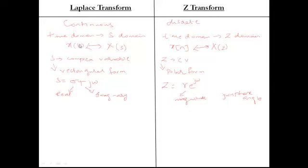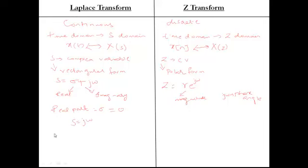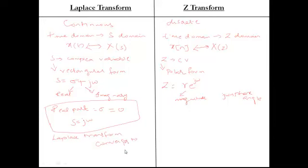In Laplace transform, if the real part sigma equals zero, then S becomes j-omega. Under this condition, Laplace transform converges to the continuous time Fourier transform. This is the condition at which Laplace transform converges to continuous time Fourier transform. Similarly, if you make the magnitude R equal to 1, then Z becomes e^(jω), and this is the condition at which Z-transform converges to discrete time Fourier transform.